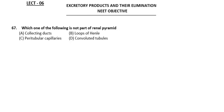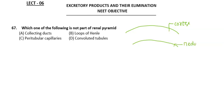Next question: which one of the following is not part of the renal pyramid? The options are: collecting ducts, loops of Henle, peritubular capillaries, and convoluted tubules. In the kidney, the outer layer is the cortex and the inner region is the medulla. In the cortex you find the Bowman's capsule.